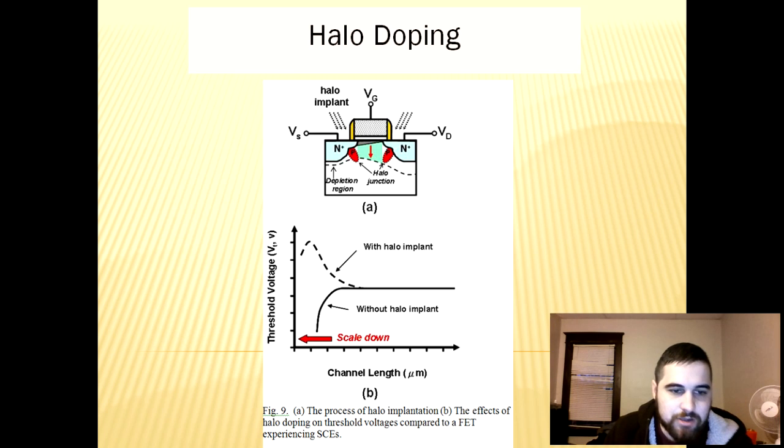The highly doped regions caused by halo implants cause a phenomenon called reverse short channel effect or RSCE by decreasing threshold voltage as channel length increases. Reverse short channel effect has only become a somewhat serious problem in recent years with the scaling of modern transistors as extreme halo doping is required to negate the corresponding threshold voltage roll off in smaller transistors.